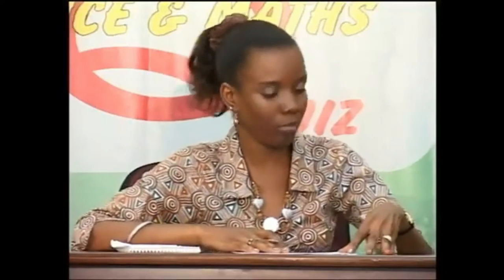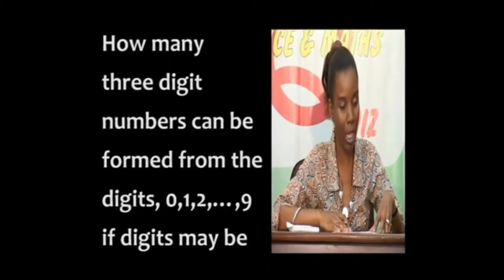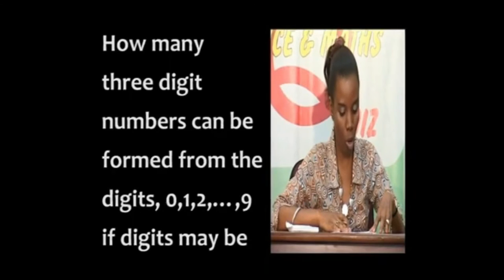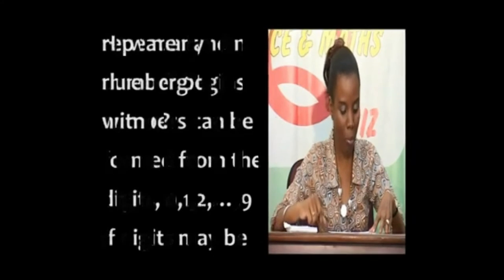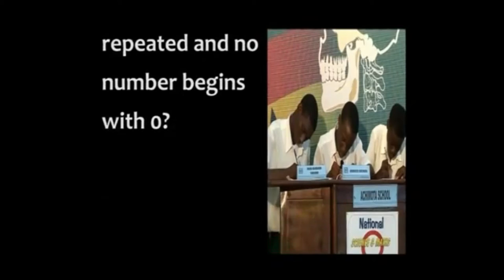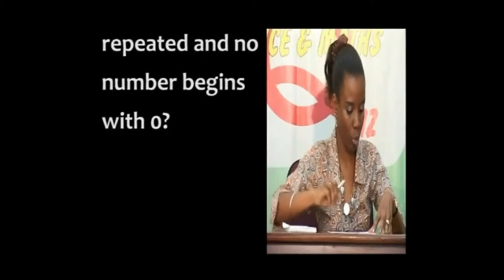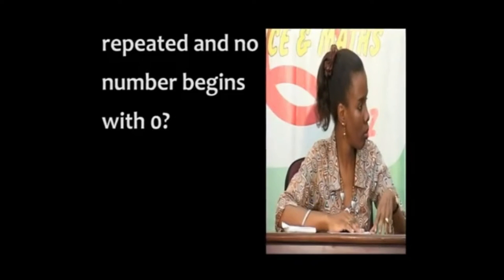Good luck. Let's begin this time with Achimota School. How many three-digit numbers can be formed from the digits 0 to 9, if digits may be repeated and no number begins with zero? Yes, Andreas. 900.